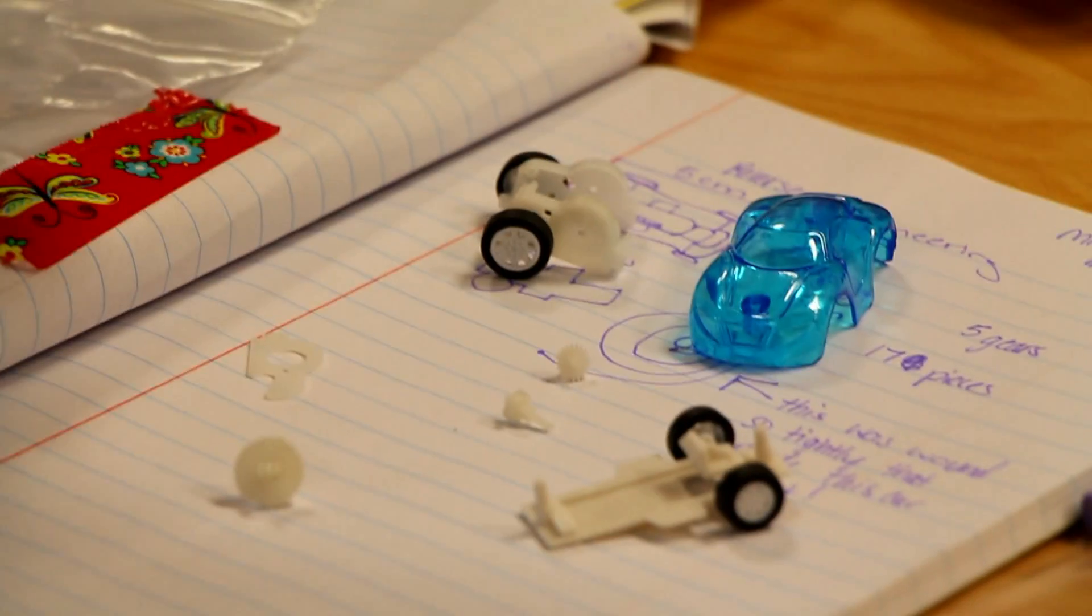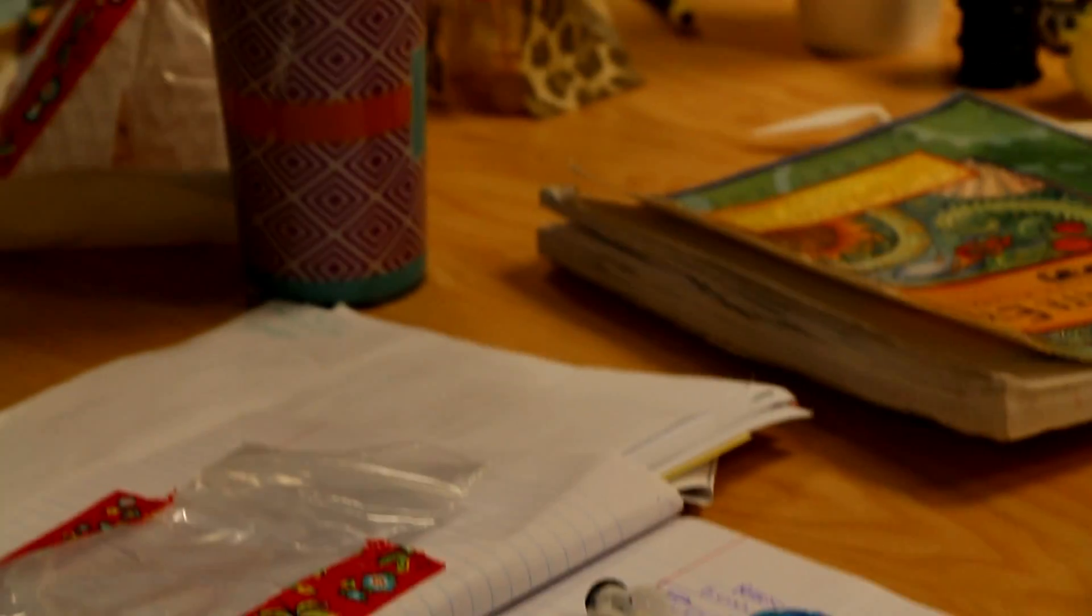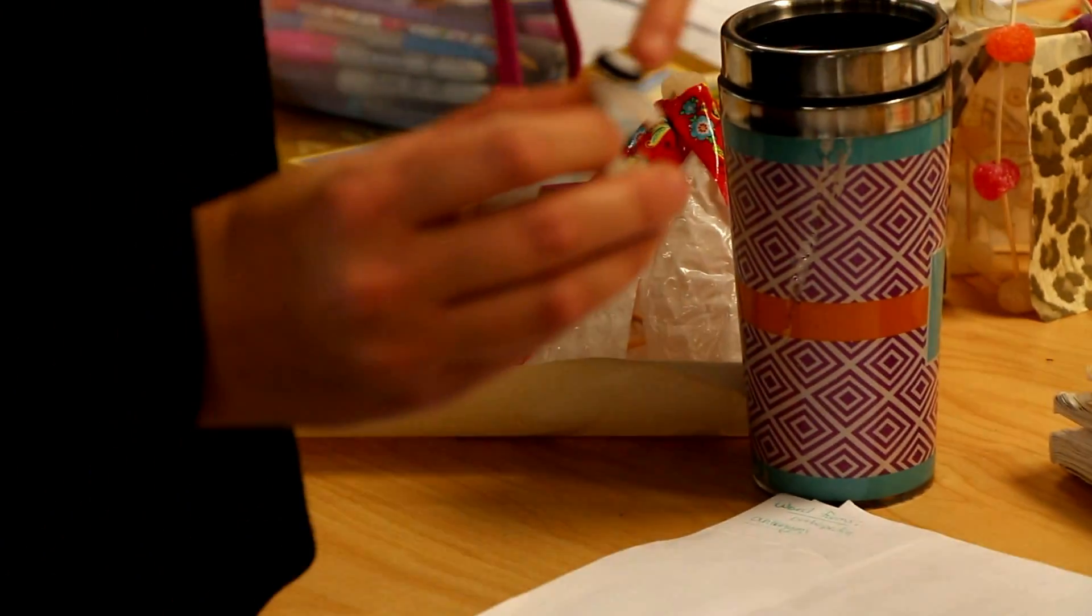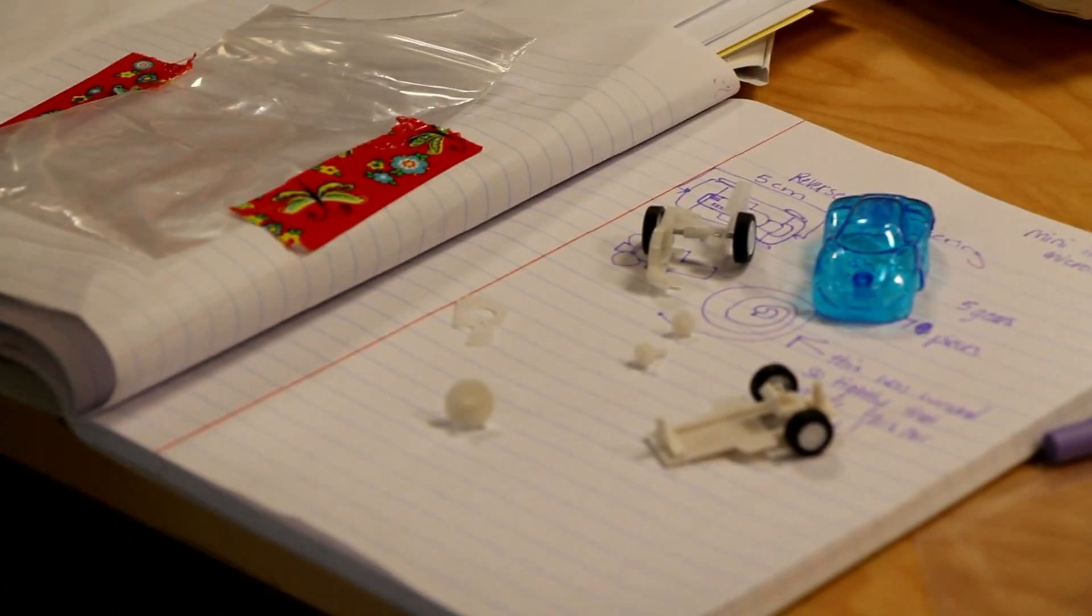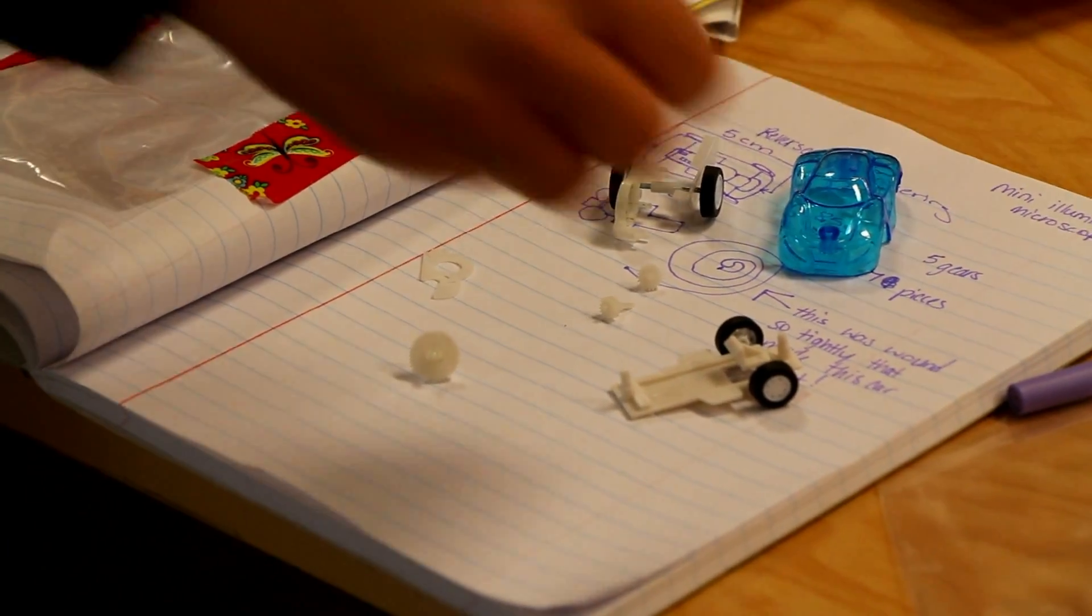And this big gear was connected to this part which held in this kind of spring wire thing, which was wound really, really tightly. So tightly it fit inside that part of the little circle. And that, because it was wound so tightly, we found that's why it would shoot off so fast.